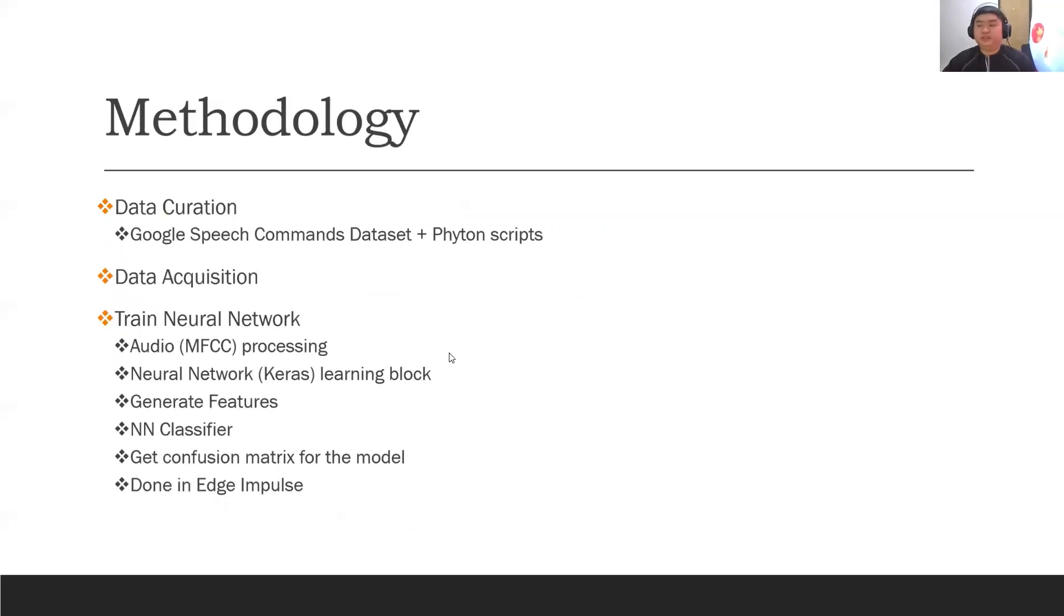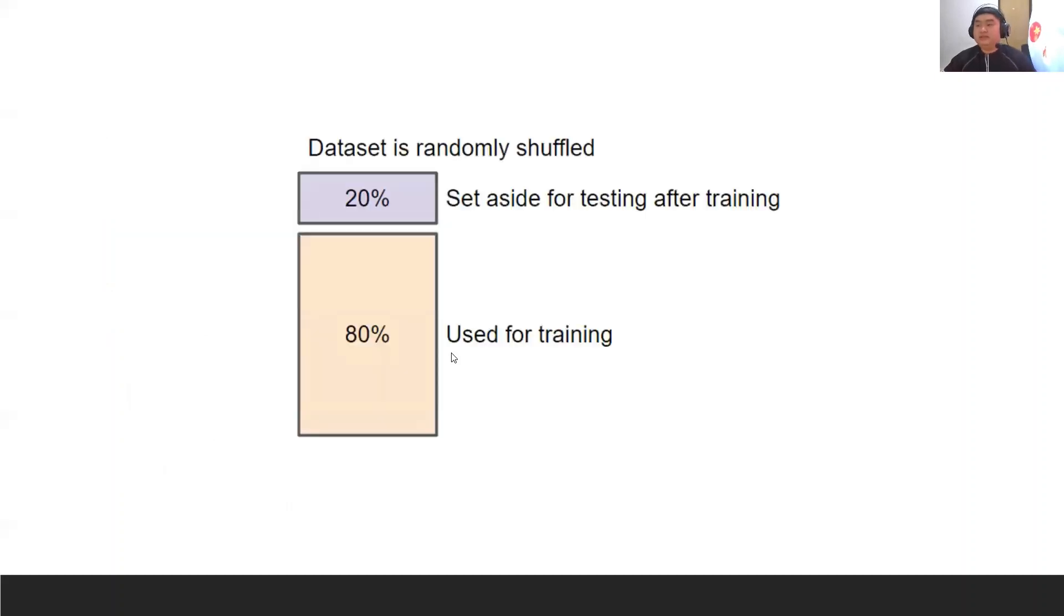Let me introduce the methodology of this project. There are three main methodologies which is data curation, data acquisition and trained neural network. The data curation is done by using the Google speech command dataset with the Python script and the data acquisition and trained neural network is done in the Edge Impulse. The dataset is randomly shuffled and 20% of the set is aside for testing after training and 80% is used for the training.